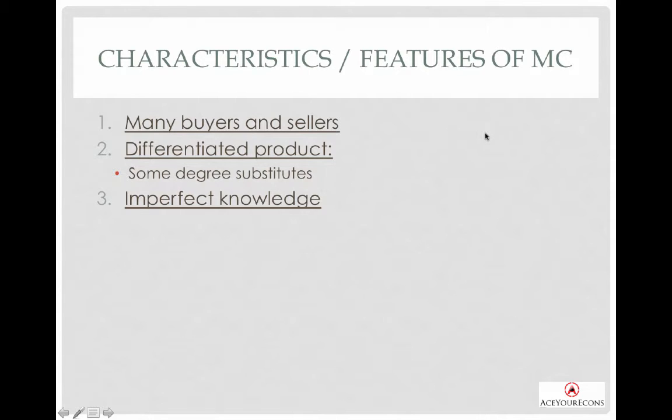The third characteristic is imperfect knowledge. Using the chicken rice store as an example: consumers do not have perfect information on the pricing of various chicken rice stores. They may go to a store that is convenient — so long as it's $3 or $3.50, they will buy. Also, producers do not know the secret formula of other chicken rice stores. So the amount of knowledge is imperfect.